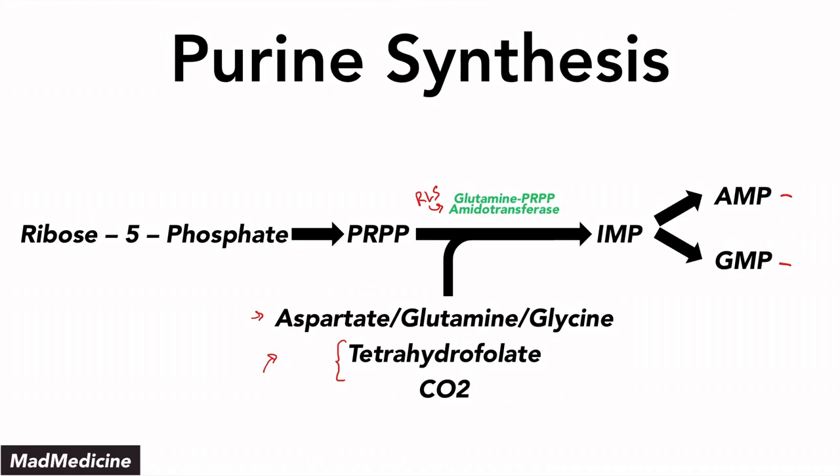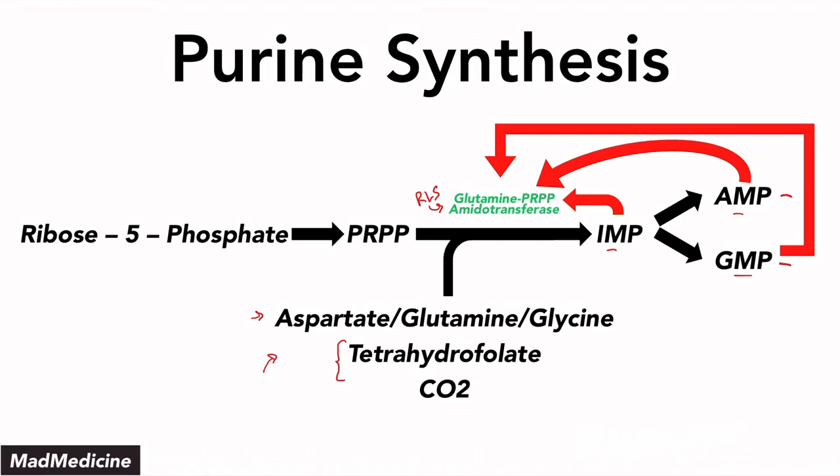IMP, AMP, and GMP can exert negative feedback on glutamine PRPP amidotransferase, causing a decrease in IMP synthesis. If you have a buildup of IMP, you'll end up building up AMP and GMP, which are physiologic mediators. A buildup could lead to elevated cyclic AMP and cyclic GMP, causing undesired physiologic effects. So once adequate amounts are present, IMP, AMP, and GMP downregulate glutamine PRPP amidotransferase to prevent excessive production.